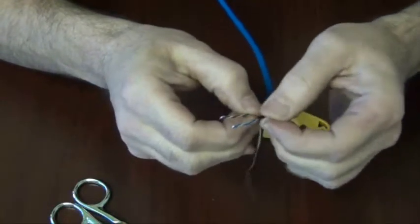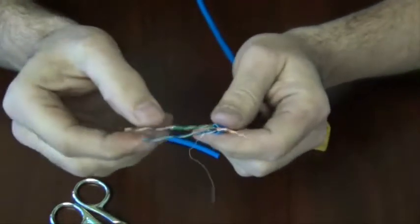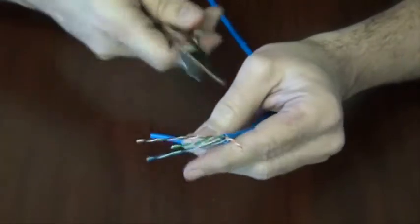You'll notice you have four pairs of wires here: orange and white, green and white, blue and white, and brown and white. But you still need to separate these wires a little bit.